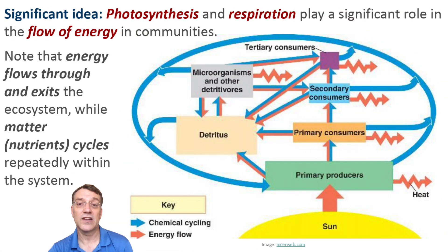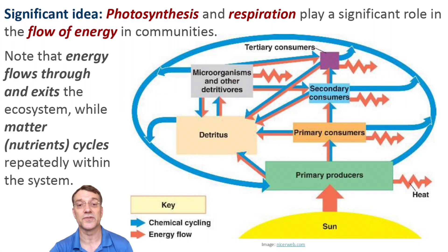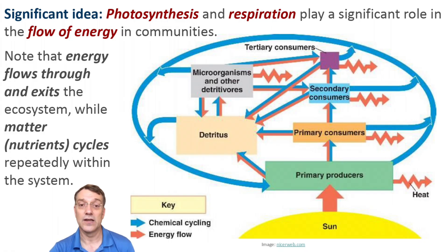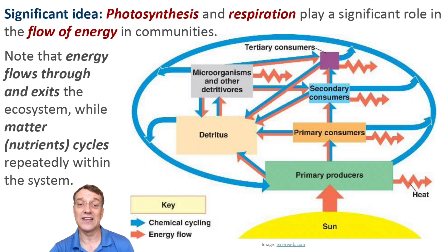A significant idea in this topic is that photosynthesis and respiration play really important roles in the flow of energy through communities. This diagram illustrates how energy flows through an ecosystem while matter cycles within it. Energy enters as sunlight, it passes through various organisms, and it ultimately exits as heat.